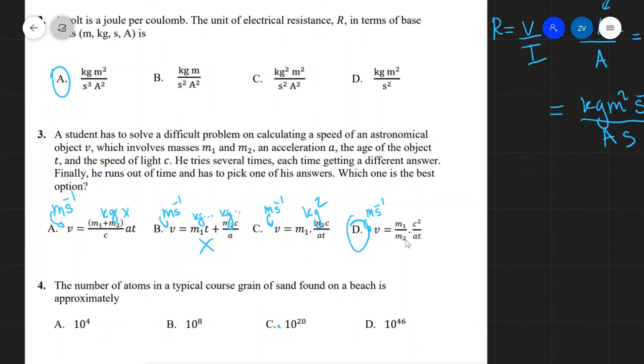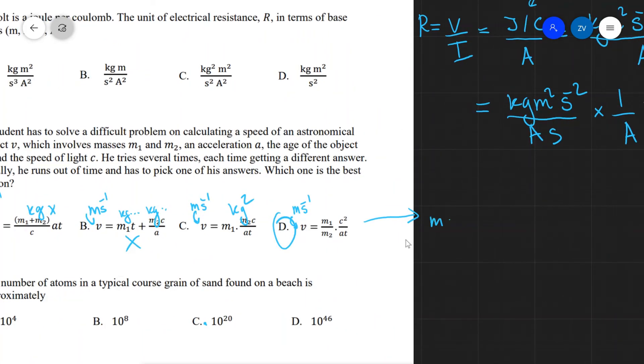We can do that really quickly. Additionally, c squared divided by at. This here will have units. Let's do this properly actually. So the units on the left are meters per second, just for practice, extra practice.